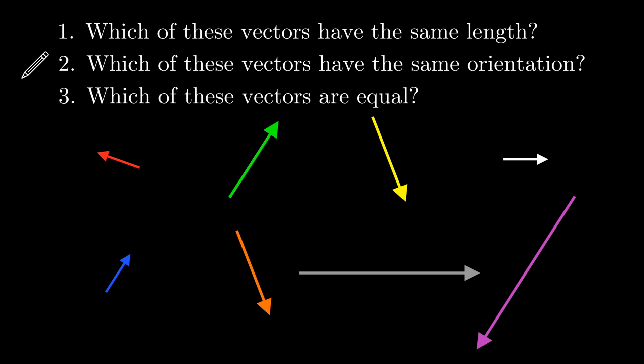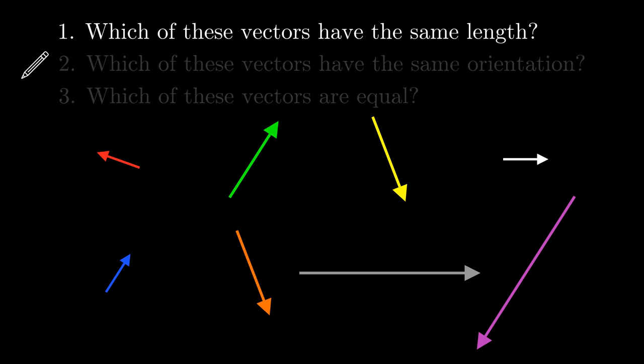Let's solve these questions in order. First, which of these vectors have the same length? We can see that there are three different lengths of vectors here. First, there are these small ones. Second, there are these that are a bit bigger. Finally, there are two here that are the biggest.